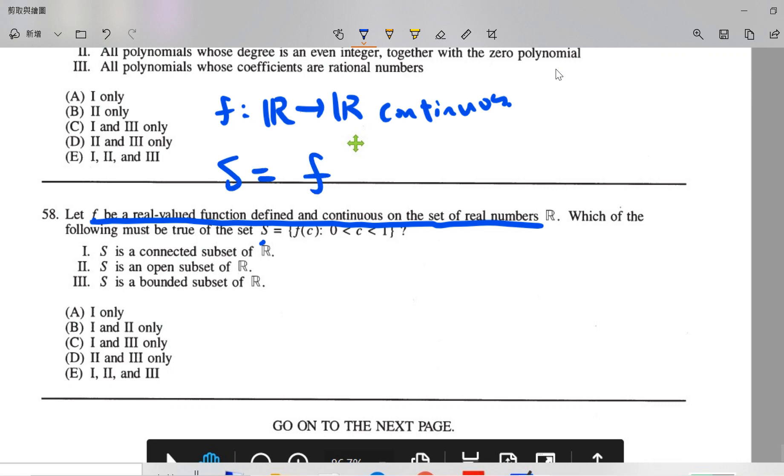So basically this set is the open interval, the image of the open interval, right? f of c, where c is greater than zero and less than one.